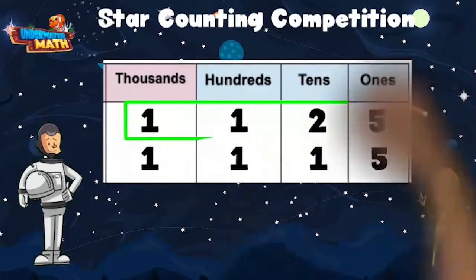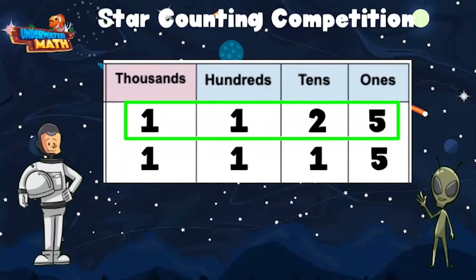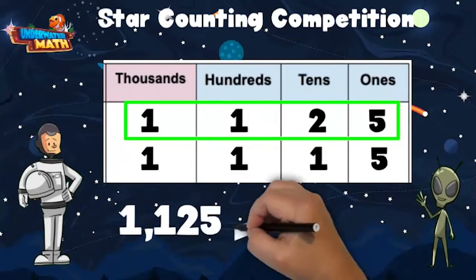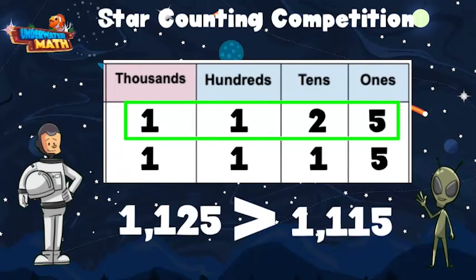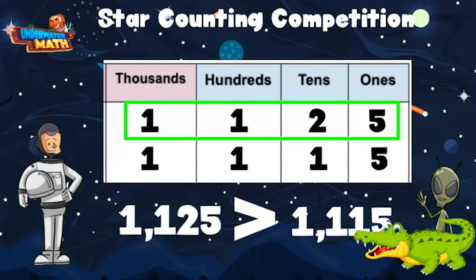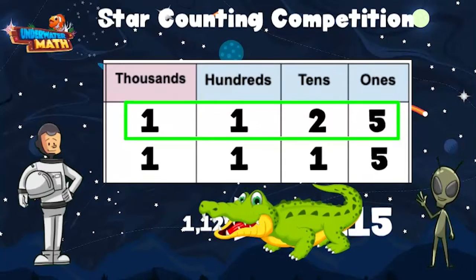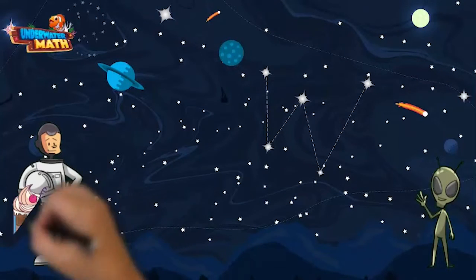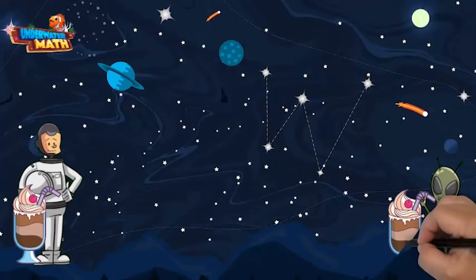I know that two is greater than one, which means the entire number is greater. We can show this by writing: 1,125 is greater than 1,115. Remember, the alligator wants to eat the bigger number. I win this round, Lenny!